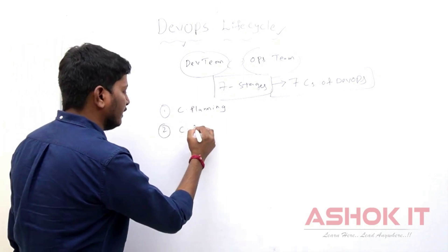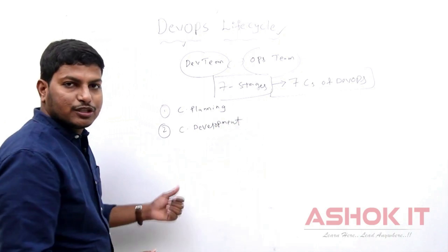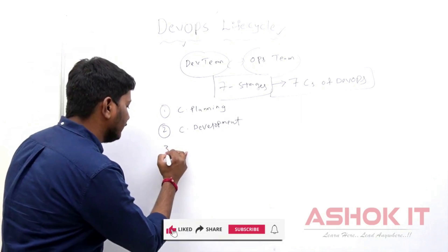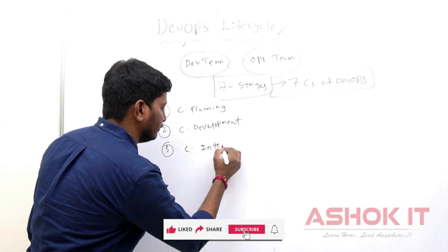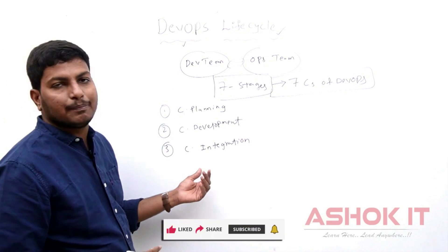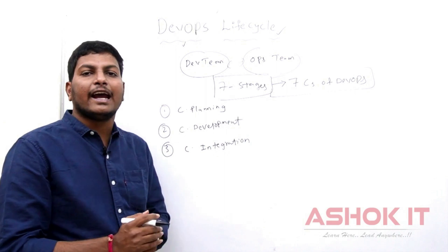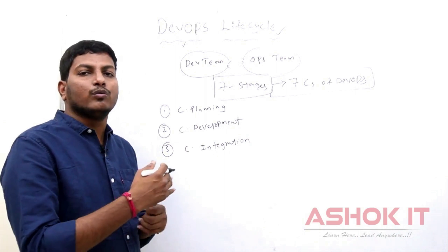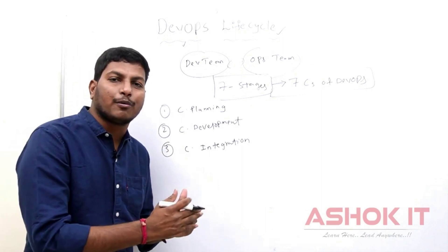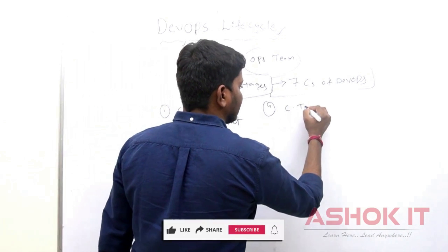The first one is continuous planning. What we want to develop and what we want to deliver, we have to plan it first. Once planning is completed, then continuous development is required. The development team comes into picture and they will write the code based on the given requirement. And continuous integration is required. Multiple developers will be available in the team, working from different locations. All the developers' code should be integrated at one place, and if any changes are required, we will be modifying and integrating that code into the existing project source code.